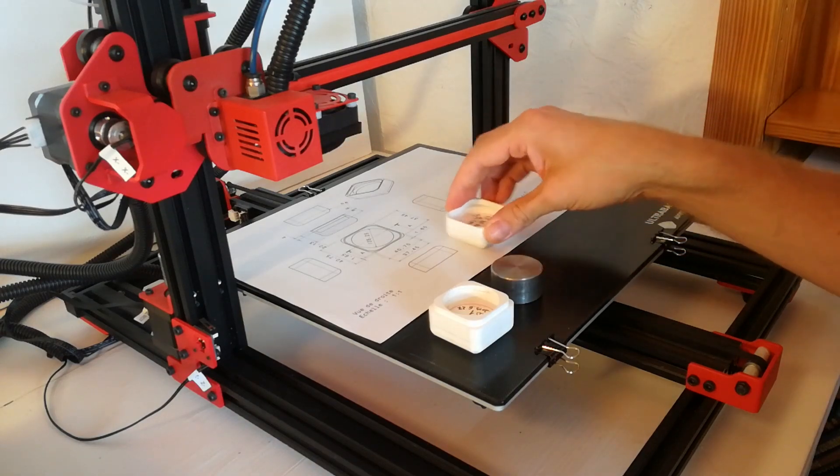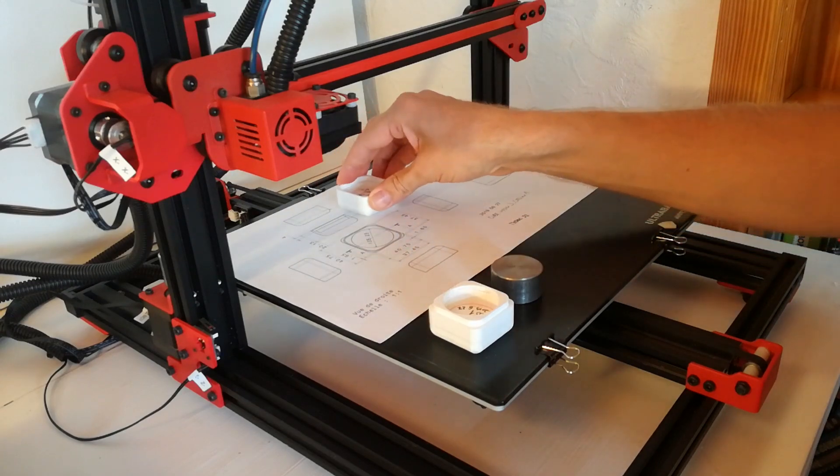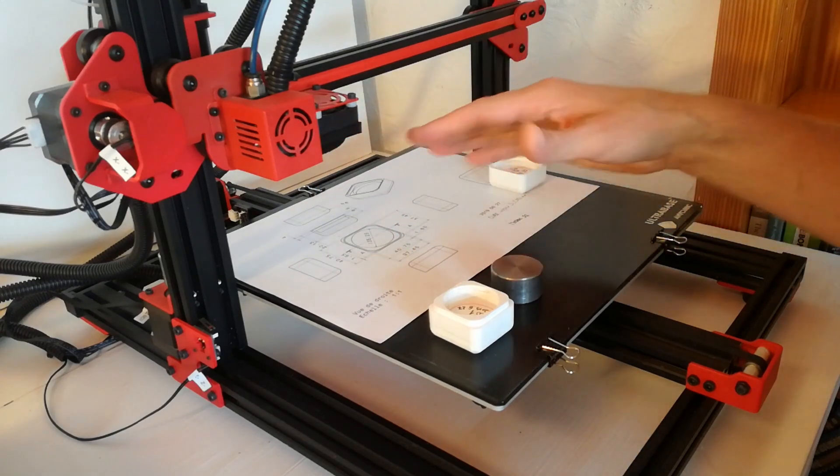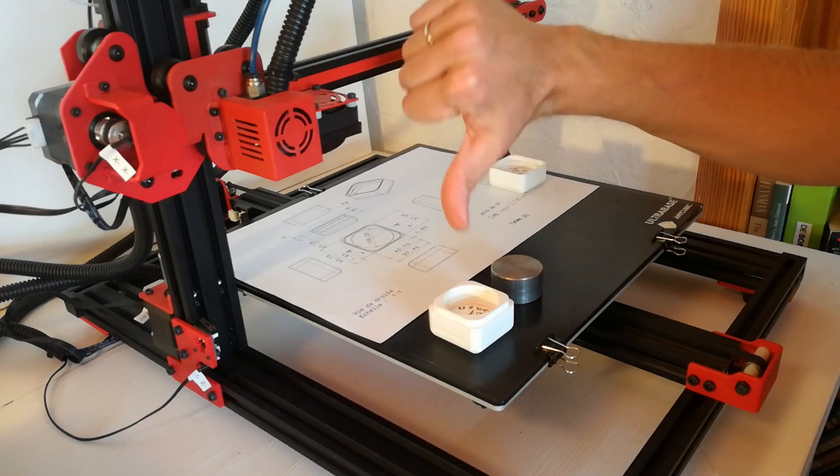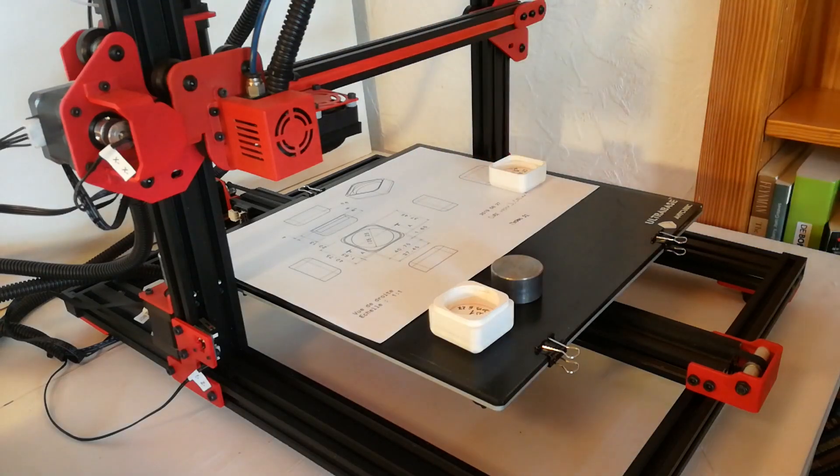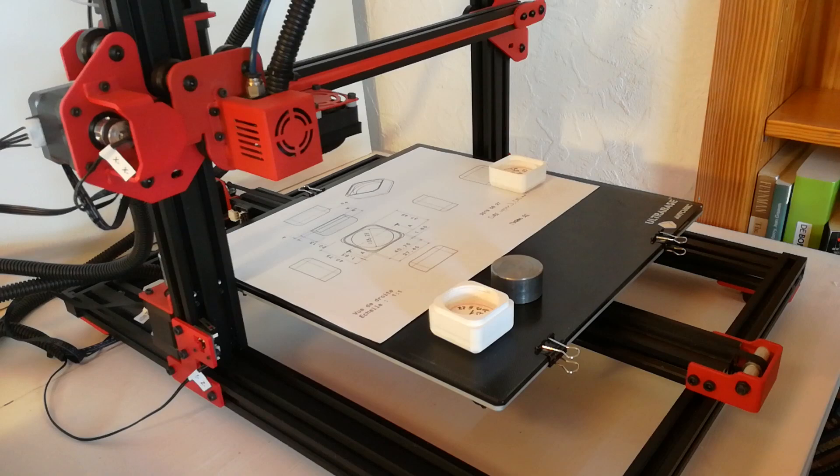But surprisingly, even when you work with one single 3D printer, it quite depends on location where the part is printed on the heated bed. So I got an idea to have a look at this phenomenon and characterize my 3D printer in terms of spatial accuracy distribution over my heated bed.